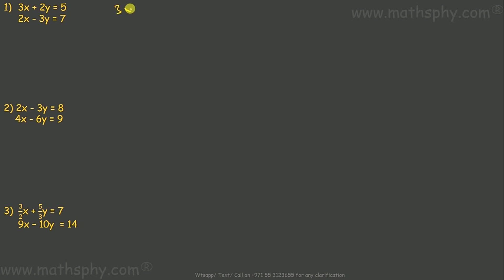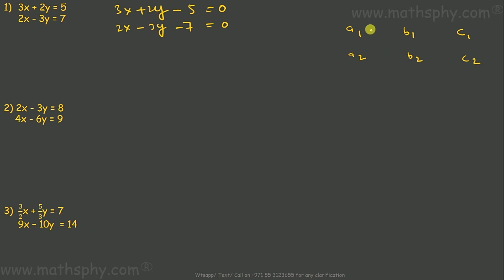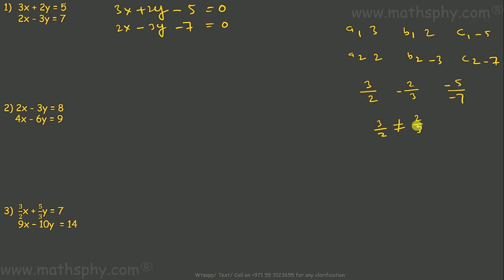First pair: 3x + 2y - 5 = 0 and 2x - 3y - 7 = 0. Here a1=3, a2=2, b1=2, b2=-3, c1=-5, c2=-7. So a1/a2 = 3/2, b1/b2 = 2/3 — since a1/a2 is not equal to b1/b2, we don't need to check c1/c2. This gives intersecting lines, meaning the system is consistent.